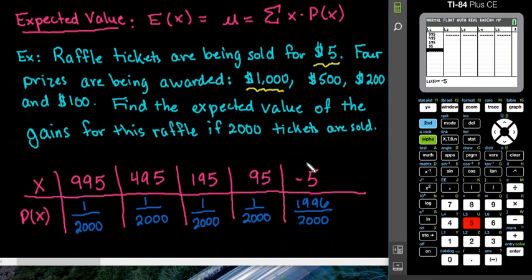So everybody, because they had to pay $5 to play, majority of our participants are not going to win, and so they're going to be out $5, which is where the negative 5 came from.